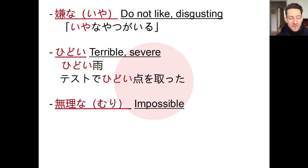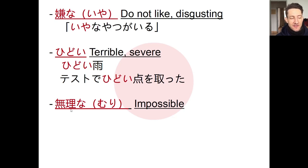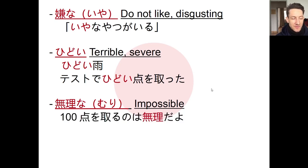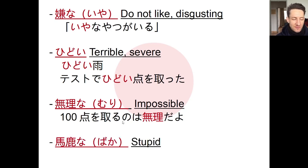Muri means something is impossible, and the kanji characters are interesting: the first character means nai — something doesn't exist — and the second means logic, so together: no logic — impossible. For example: hyakuten wo toru no wa muri da yo — it's impossible to get a hundred points.